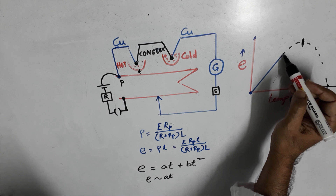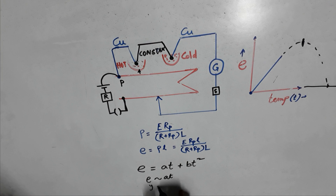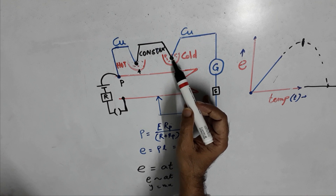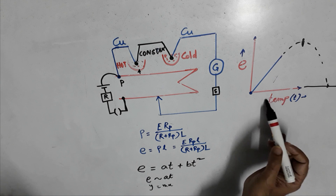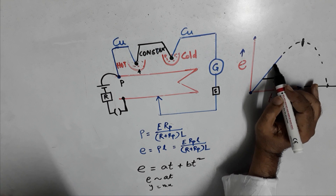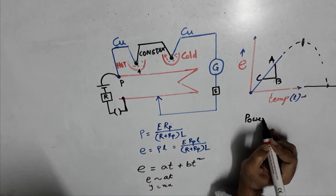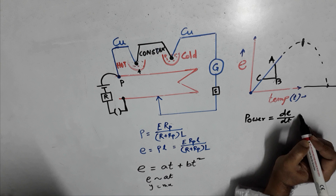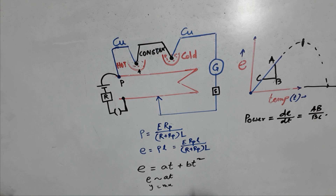If temperatures are well below the neutral or inversion temperature, the e vs. t graph approximates a straight line through the origin (y = mx). If the cold junction is not at 0°C, the difference of temperature between junctions must be plotted. The thermoelectric power is defined as de/dt, equal to the slope (AB/BC) of the e versus temperature graph, allowing us to determine thermoelectric power and EMF at different temperatures.